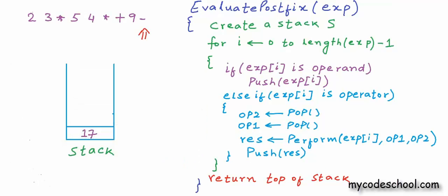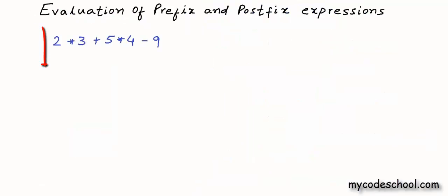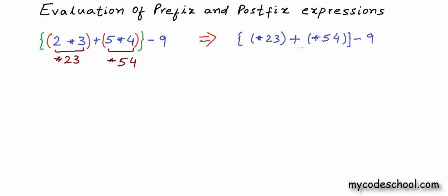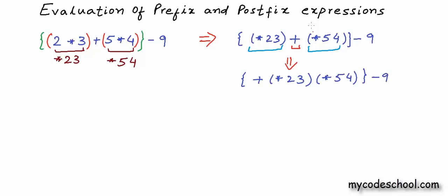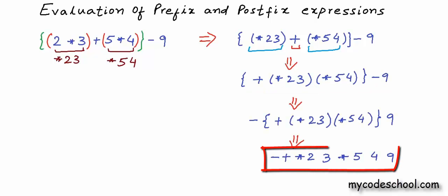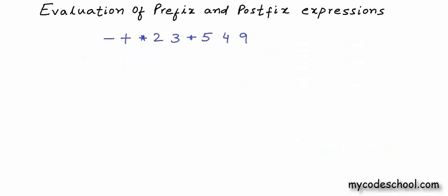Let's now quickly see how we can do prefix evaluation. I've written this expression in infix form and I'll first convert it to prefix. We will go in order of precedence. This 2 asterisk 3 will become asterisk 2 3. This 5 into 4 will become asterisk 5 4. Now we pick the plus operator whose operands are these two prefix expressions. Finally, for the subtraction operator, this is the first operand and this is the second operand. In the last step we get rid of all the parentheses — this is what we have finally.